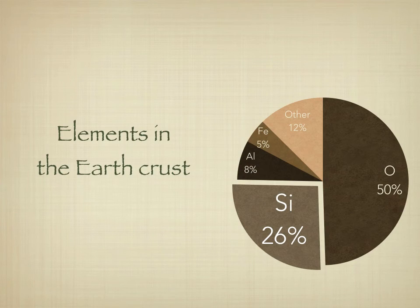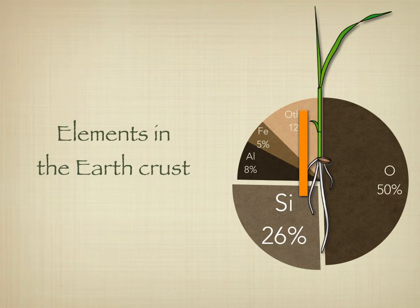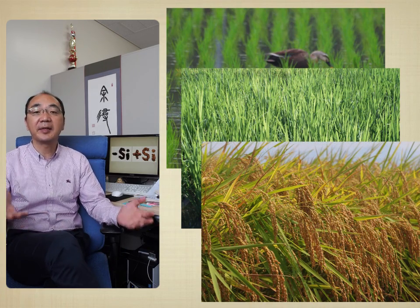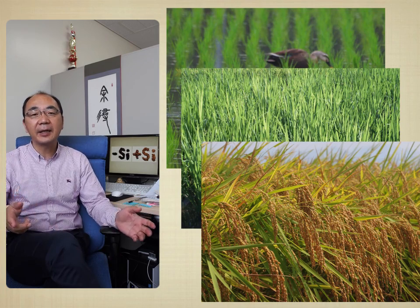Silicon is the most abundant mineral element in the earth's crust, so all plants rooting in soil contain silicon in their tissues. Silicon has not been recognized as an essential element for plant growth and development, but it does have a number of beneficial effects, which are characterized by protecting plants from biotic and abiotic stress. Higher silicon accumulation is especially important for the higher and sustainable production of rice, which is a typical silicon-accumulating species.